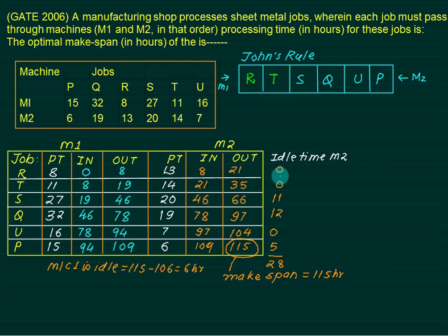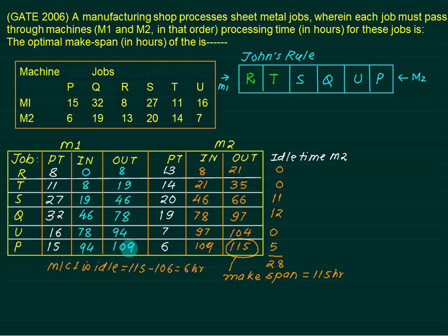The optimal makespan time is 115 hours. Sometimes the question will ask for the idle time on M2, which is 28 hours, and the idle time on M1. To find M1 idle time, take the maximum completion time on M2 minus the maximum completion time on M1 — the difference gives the idle time for machine M1.